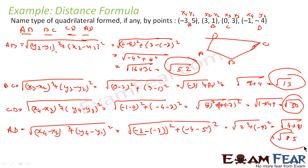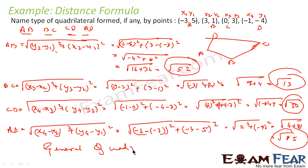So we see all the sides are different: root 52, root 13, root 50, root 85. Since all sides are different, we cannot comment on the type of quadrilateral specifically. It is not a square, not a rhombus, not a rectangle — just a general quadrilateral because all the sides are different.